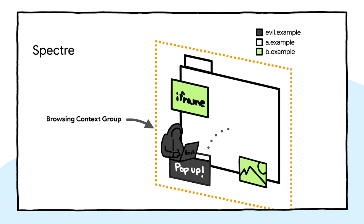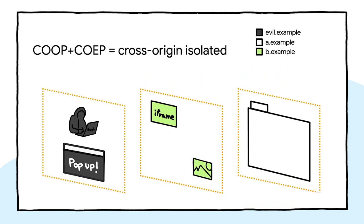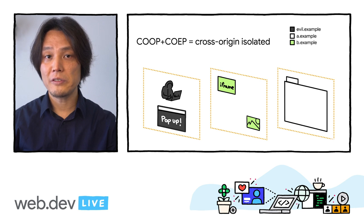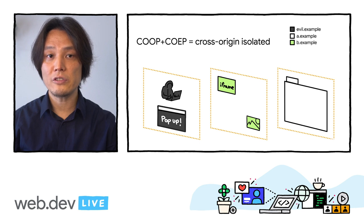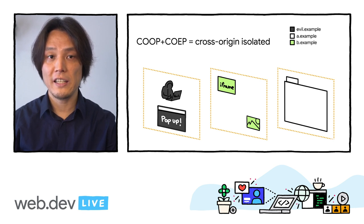As a quick response, browser vendors decided to turn off features that could be used to construct high-precision timers — for example, shared array buffers. To mitigate the risk of Spectre and make powerful features available on a webpage, its origin needs to be isolated from others. By isolating origins into separate browsing context groups, Spectre and other exploits that grant permissions to read arbitrary memory in the same process are no longer able to read cross-origin contents. This, in turn, allows browsers to bring back the powerful features on pages that are properly isolated.